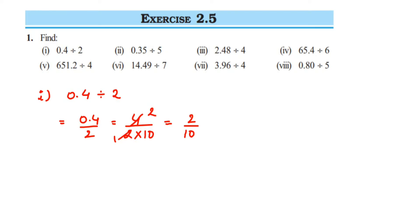We have 10 in the denominator, so convert back into decimal. I have one zero, so after one digit from the right I place the decimal point — that gives 0.2. If you cancel 2 upon 10 to 1 by 5 and divide further, you still get 0.2, the same answer. So 0.2 is the answer.